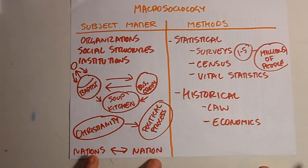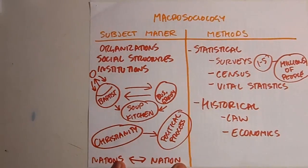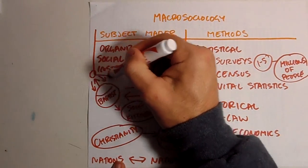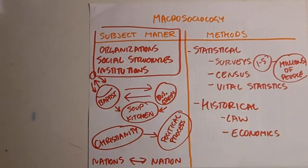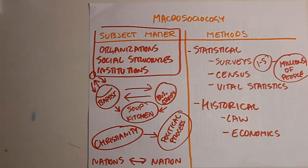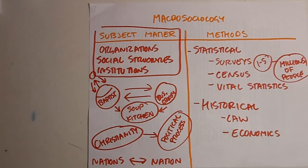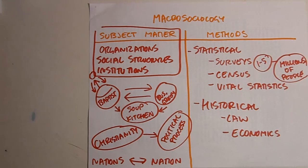The most important thing to remember — the bottom line — is that macro-sociology is the study of organizations, social structures, and institutions: their behavior, their interaction with each other, and their influence on individuals and the broader society. These are macro-sociological questions. Thank you for watching.